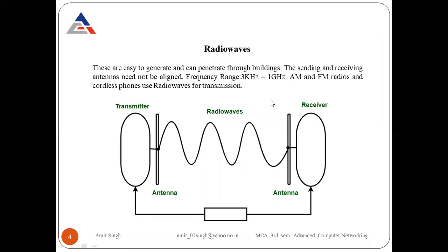FM radios and cordless phones use radio waves for transmission. For example, your cell phone has a built-in radio; when you open it, stations like 92.7 FM are available — 92.7 is the frequency on which your phone receives signals via electromagnetic waves. Cordless phones, where no cord or wire is present, also receive signals through the air as electromagnetic signals.